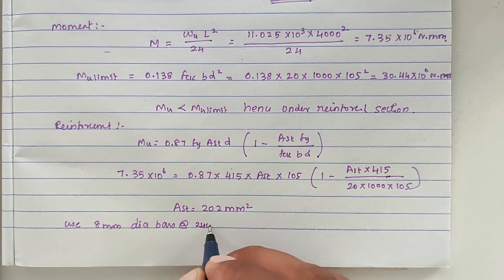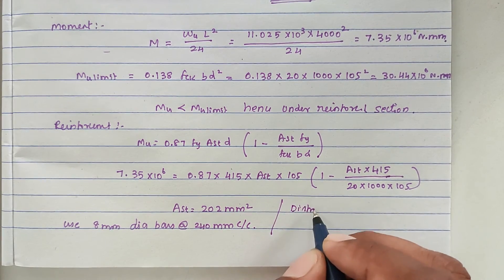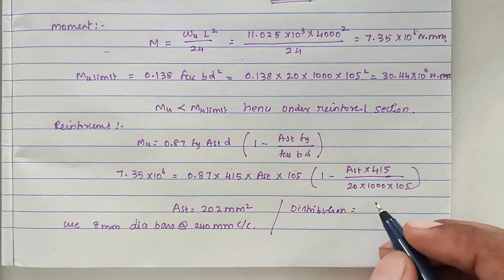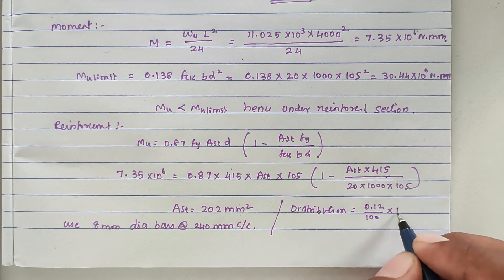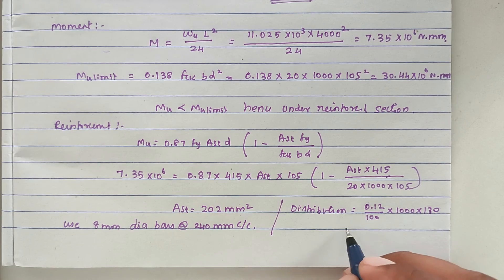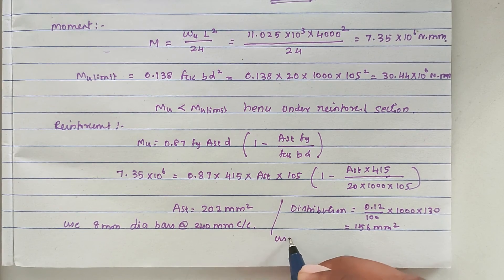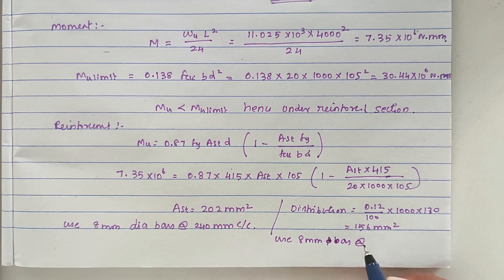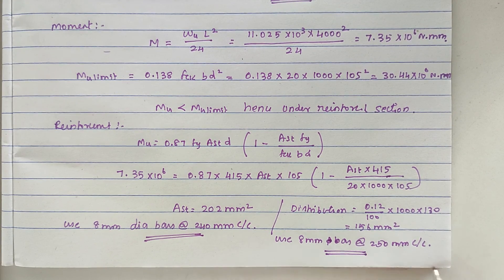For the distribution bars, the minimum steel is 0.12% of b × D, which is 0.12/100 × 1000 × 130 = 156 mm². We use 8 mm diameter bars at 250 mm center-to-center for distribution reinforcement. In both cases — main and distribution reinforcement — we use 8 mm diameter bars. This is the complete method to solve the problem. Thank you.